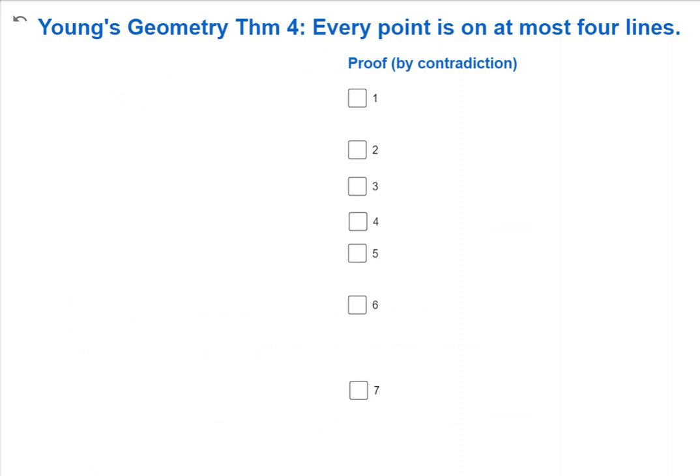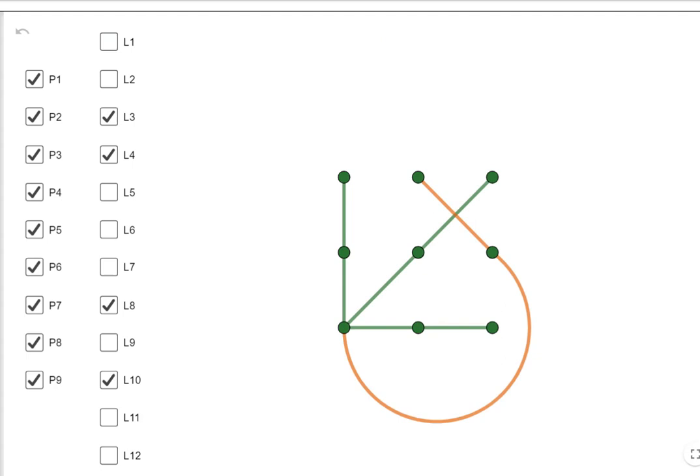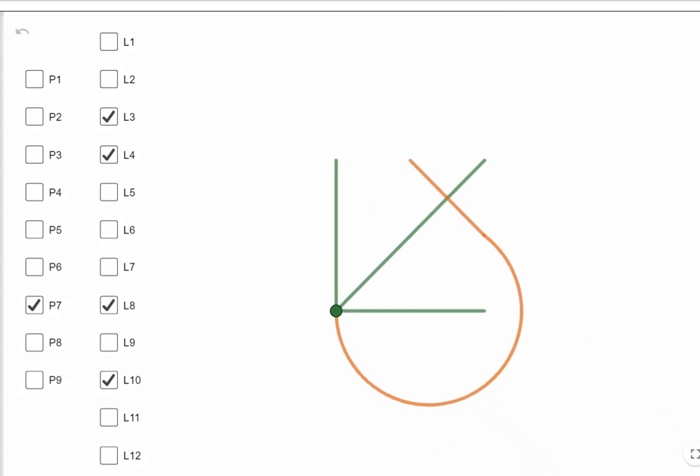I'm going to do a proof by contradiction. So I'm going to include all these four lines, which by theorem three is true. And then I'm going to say, what if another line exists? The idea is we're going to add another line on here and then use that to contradict something. This is going to be a proof by contradiction. But what the heck are we going to contradict?